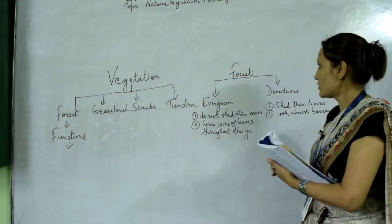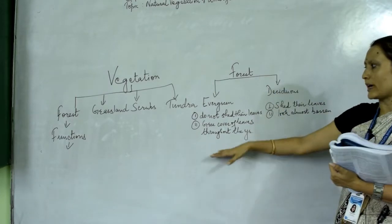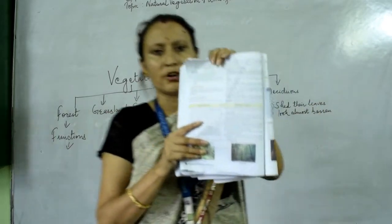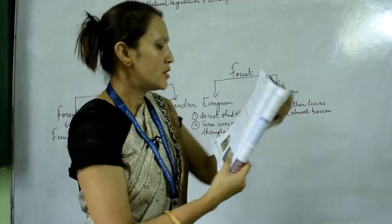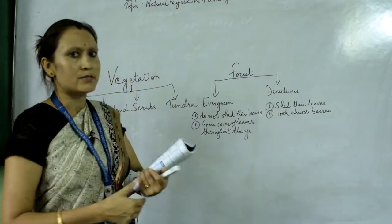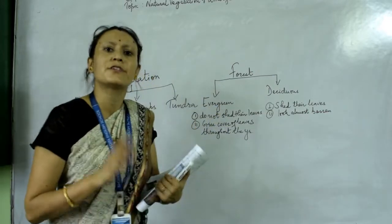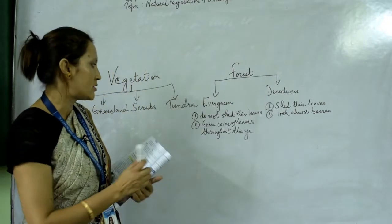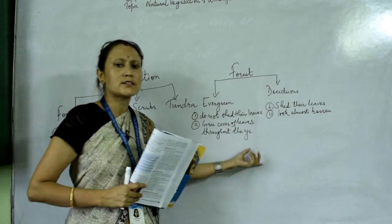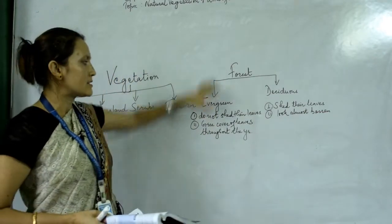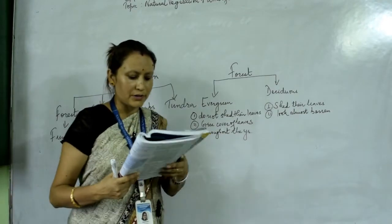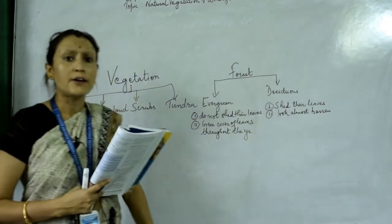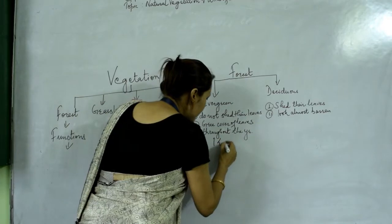The types of forest: forests are mainly categorized into two heads, that is evergreen forest and deciduous forest. Evergreen forest — from the term itself, we can define: always green. They do not shed their leaves, and the green cover of leaves remains throughout the year. Evergreen forests are mainly found in areas where rainfall is above 140 centimeters.